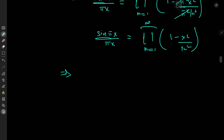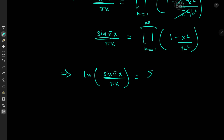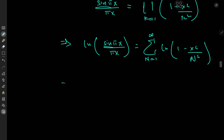That's no problem, because taking logarithms we get log(sin(πx) / πx) equal to the log of this infinite product, and the log of a product is a sum. So we now have the sum over n from 1 to infinity of log(1 − x²/n²), which is exactly what we needed — only with a negative sign.